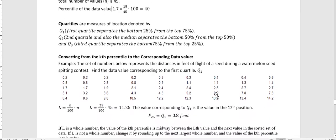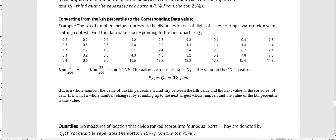So in the second example, we use the same data set. The set of numbers below represents the distances of feet of a seed during a watermelon seed spitting contest. Find the data value corresponding to the first quartile. Now before they gave us the value and they asked us to find the percentile. And this is opposite. They're giving us the quartile or the percentage and they're asking us to find the data value.